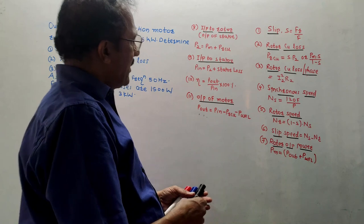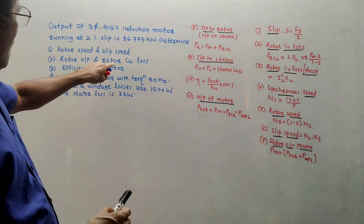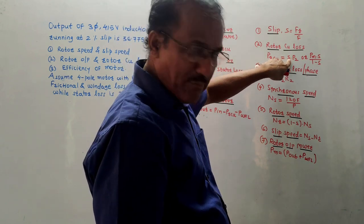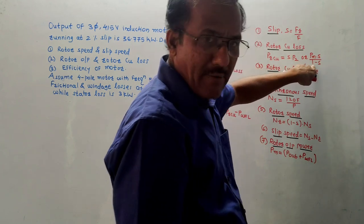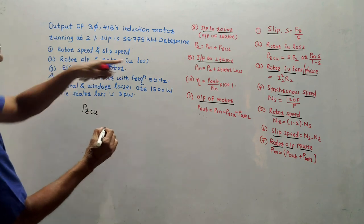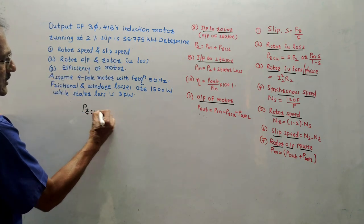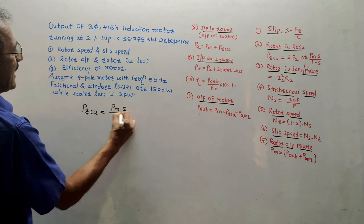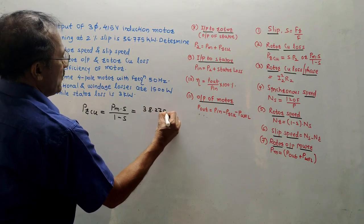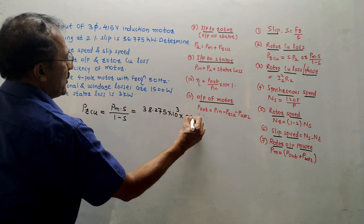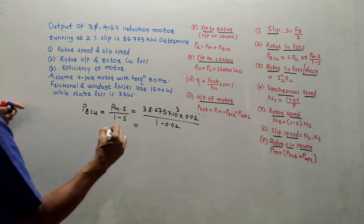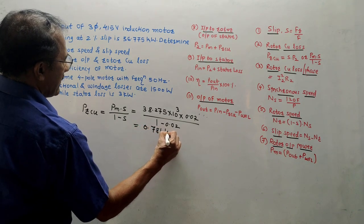Now calculate rotor copper losses. For PRCU we have two formulae: slip × P2, or PM × S / (1 − S). We have the value of PM, so using the second formula: PRCU = PM × S / (1 − S) = 38.275 × 10³ × 0.02 / (1 − 0.02) = 0.781 kilowatt. This is the value of rotor copper loss.